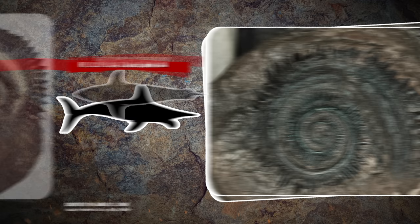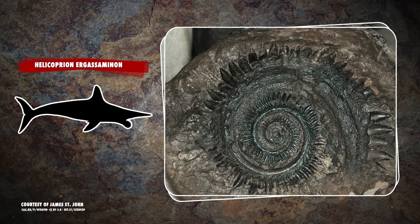Helicoprion ergasaminon was like a combo of the other two, with narrow, closely spaced teeth and tall cutting surfaces. Even though Helicoprion caused scientists to spiral for over a century, at least now we have a better understanding of this extinct fish, thanks to its toothy whirl.